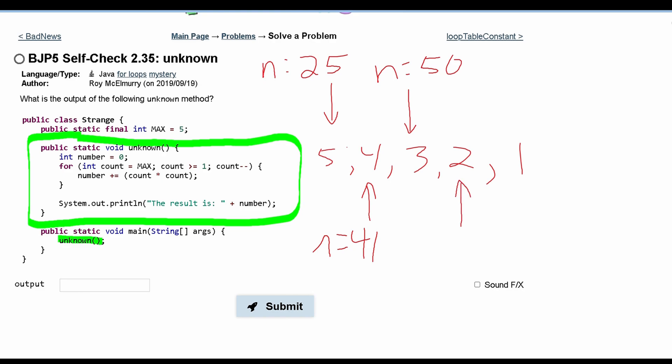Now for count being equal to 2, we have count times count. So we get 4 plus 50. So we get that n is equal to 54.